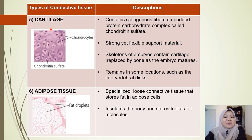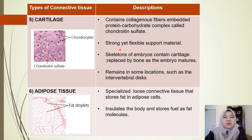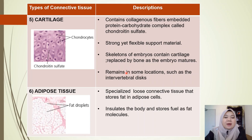Cartilage contains collagenous fibers embedded in a protein-carbohydrate complex called chondroitin sulfate. It is strong yet flexible support material. The skeletons of embryos contain cartilage, but it is replaced by bone as the embryo matures. However, some cartilage remains in certain locations, such as the intervertebral discs, which are the cushions between the vertebrae.